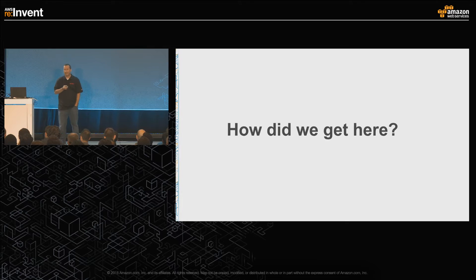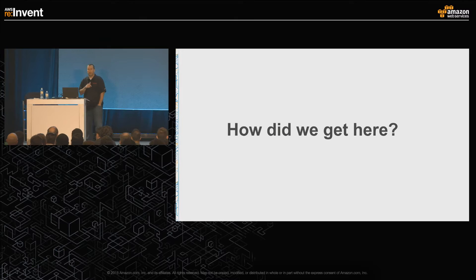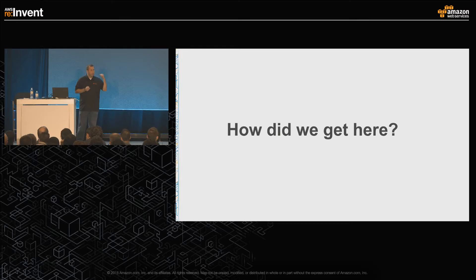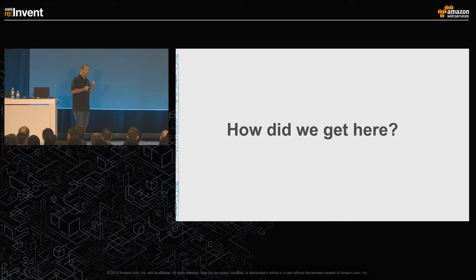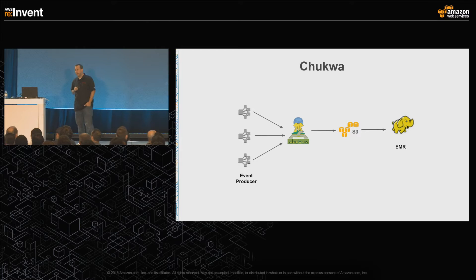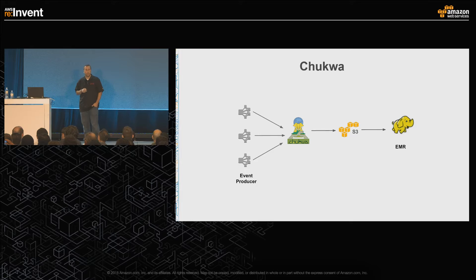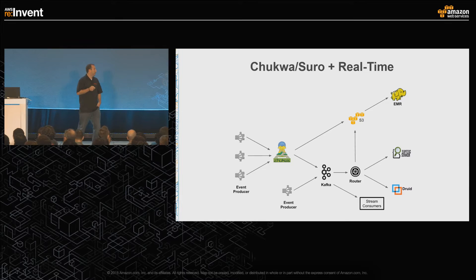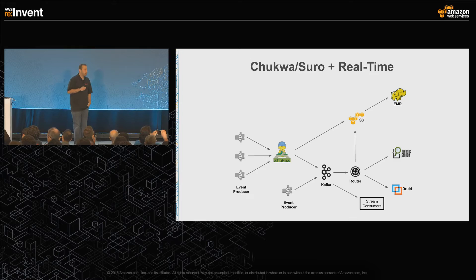I want to take a few minutes and look at how we arrived to where we're at today. When we first started, our needs were fairly simple. We had applications and services that published events, and we wanted to collect those and write them to S3. We based our pipeline on Apache Chukwa, and it served us pretty well for a while. As time went on, we started getting more and more requests for at-least-once delivery as well as real-time. So we introduced a branch off mainline that T'd traffic — about 20% of traffic went through the real-time pipe.